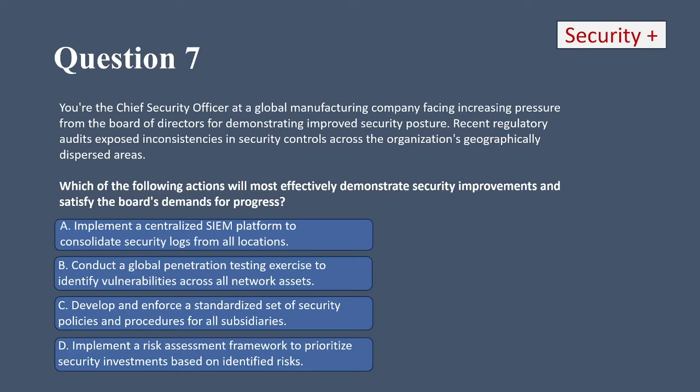Question 15. Your company relies on passwords for user authentication. Recent security audits revealed concerns about password strength and potential rainbow table attacks. Management wants to significantly improve password security without increasing login complexity for users. Which of the following would be the best option to strengthen passwords and mitigate rainbow table threats without adding complexity for users? A, implement MFA for all user accounts; B, enforce stricter password complexity requirements like minimum lengths and character types; C, implement salting with a unique random value for each user password; or D, implement hashing algorithms with larger digest size like SHA-3.